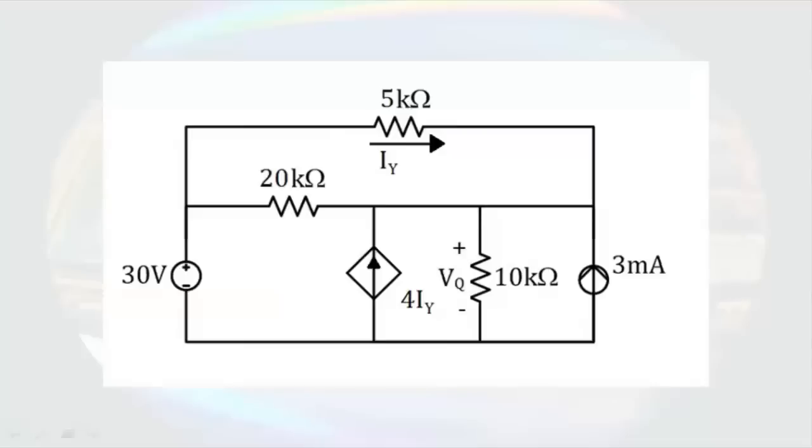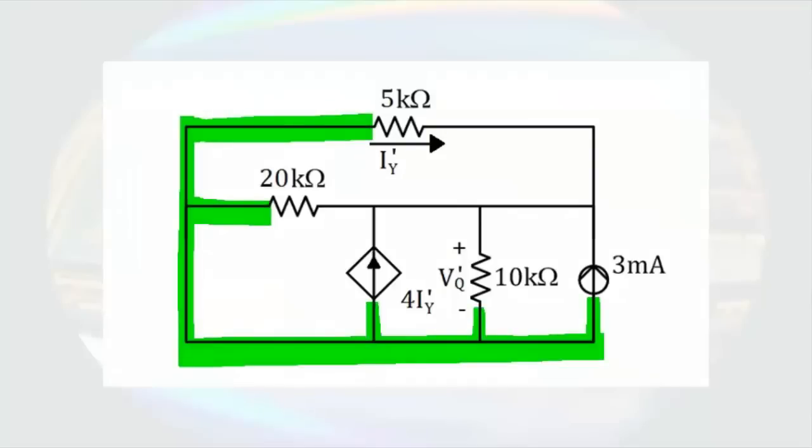To use superposition to solve for VQ, we need to analyze a contribution to VQ from each of the independent sources. Let's start by looking at the response due to the 3 milliamp source. To do that, we turn off the 30 volt source. We turn off the source by making the voltage of the source zero, and that is the same as replacing it with a wire. So let's start by highlighting the nodes. This makes it easy to see there are only two nodes in the circuit, so there is only one voltage, VQ prime.